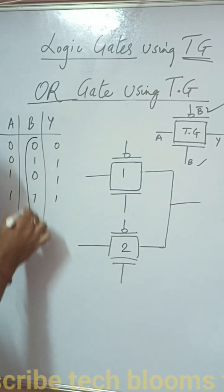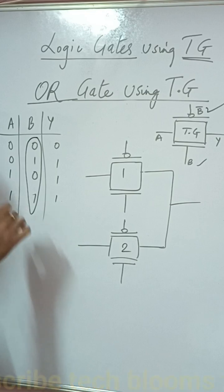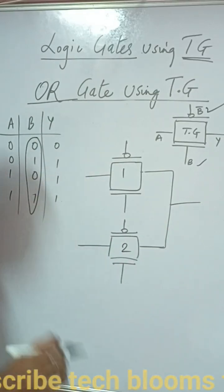So we need to be taking B as a signal here as I have already mentioned why I take B. You can also take A but depending upon that your design of the transmission gate will change.